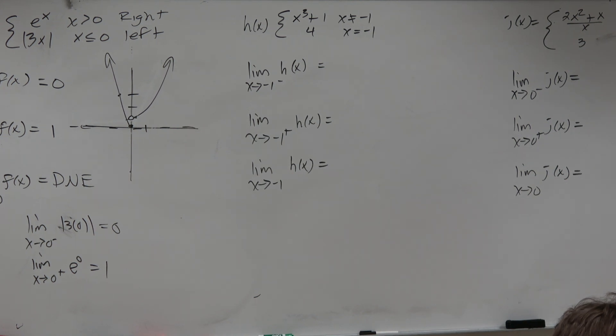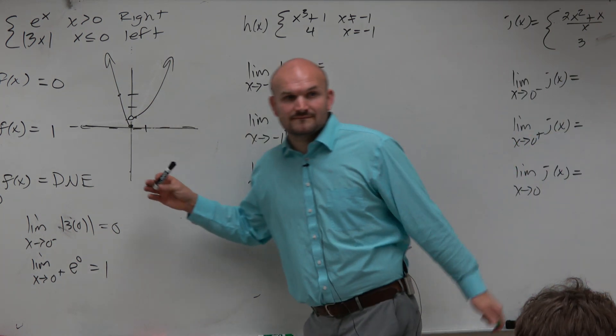Let's go and take a look at this example. So this is really important for us to understand our continuity. Because the last function we did had what type of discontinuity? Rhymes with hump. Jump. Jump, right?